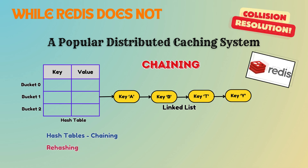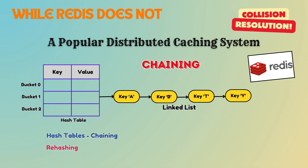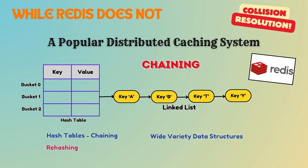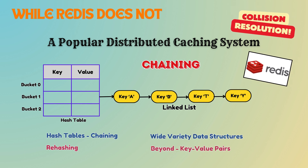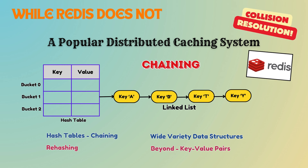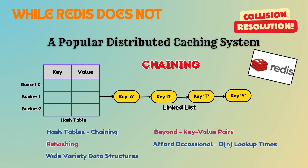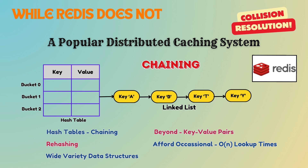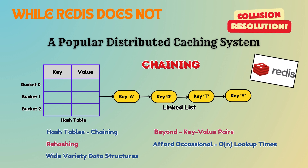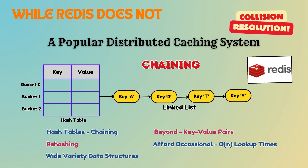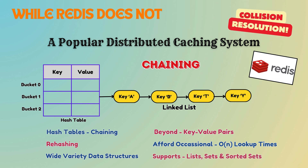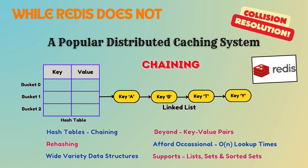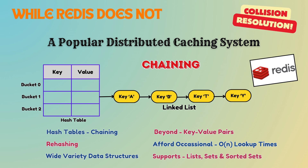Redis, on the other hand, does not use cuckoo hashing. Redis uses a combination of hash tables with chaining and rehashing to manage collisions. This works well in Redis because its typical use case involves managing a wide variety of data structures beyond simple key-value pairs. Redis can afford the occasional performance degradation of O(n) time in lookups, especially since it focuses on versatility and supports rich data types such as lists, sets, and sorted sets.